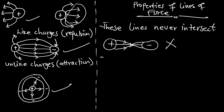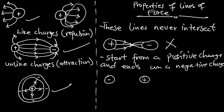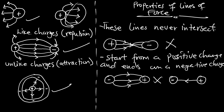The second property is that each line of force starts from a positive charge and terminates on a negative charge. It always starts from a positive charge and ends on a negative charge. We cannot have lines moving from negative to positive — it will never happen. It is always from the positive to the negative, always from the positive to the negative.